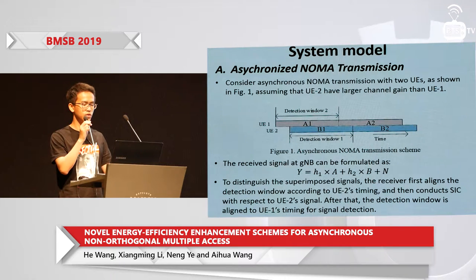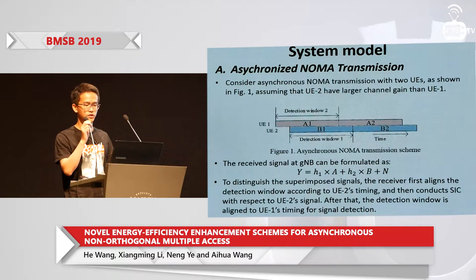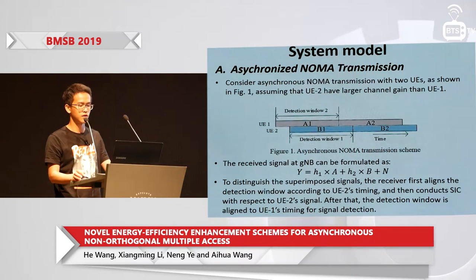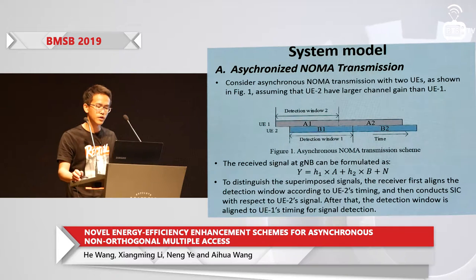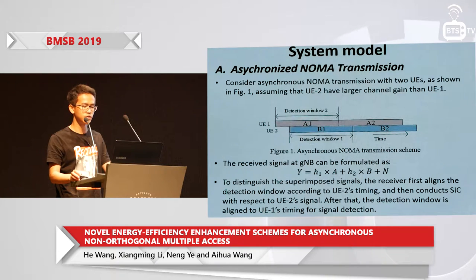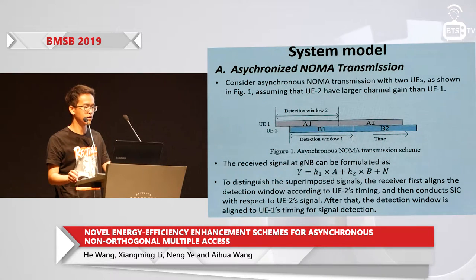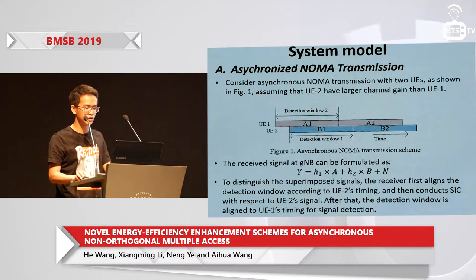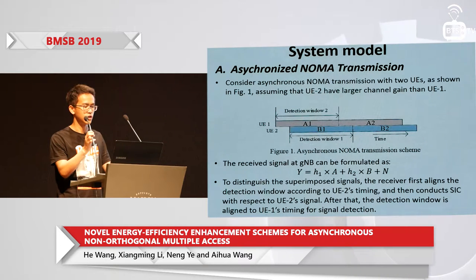This is our system model. We consider an asynchronous NOMA transmission with two UEs, as shown in the figure on this slide. Without loss of generality, we assume UE2 has larger channel gains than UE1, and the received signal at the base station can be formulated as Y equals H1 and H2 plus noise N. To distinguish the superimposed signal, we conduct simple SIC decoding.